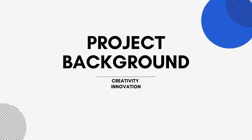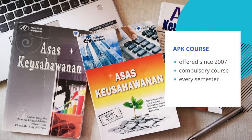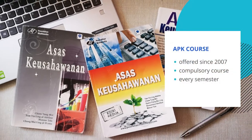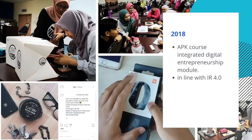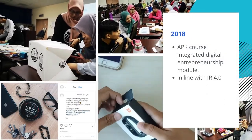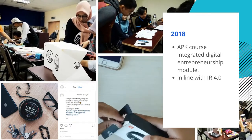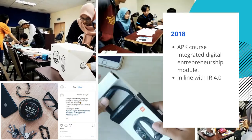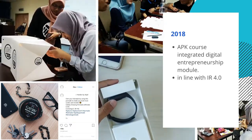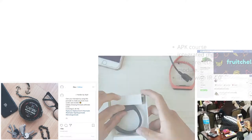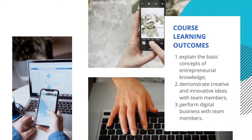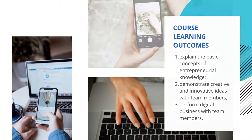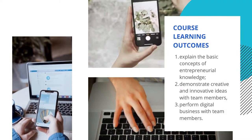APK was introduced back in 2007 and is a compulsory course offered to second year science and arts stream students. In line with UMS Malaysia Sabah's Revolution Industry 4.0, APK has integrated a Digital Entrepreneurship module in the curriculum since early 2018. The course emphasizes experiential learning, and the practical component accounts for 60% of the course.